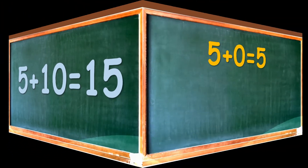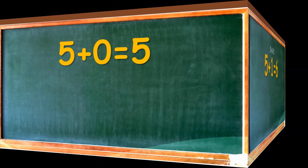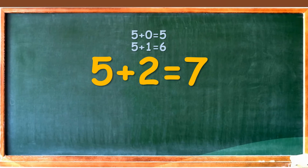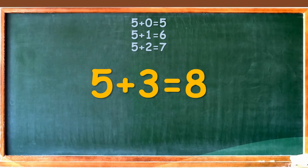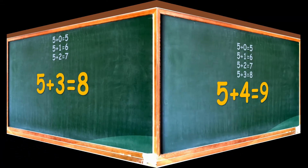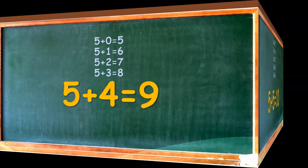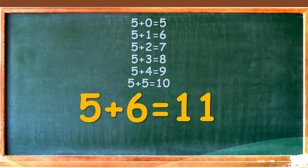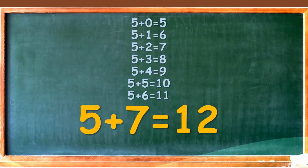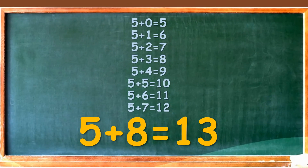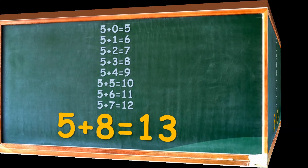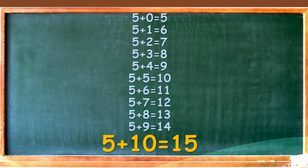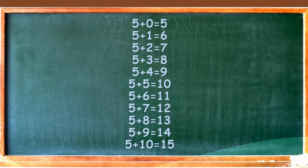Let us repeat. 5 plus 0 is equal to 5. 5 plus 1 is equal to 6. 5 plus 2 is equal to 7. 5 plus 3 is equal to 8. 5 plus 4 is equal to 9. 5 plus 5 is equal to 10. 5 plus 6 is equal to 11. 5 plus 7 is equal to 12. 5 plus 8 is equal to 13. 5 plus 9 is equal to 14. 5 plus 10 is equal to 15. So this is the addition table of 5.